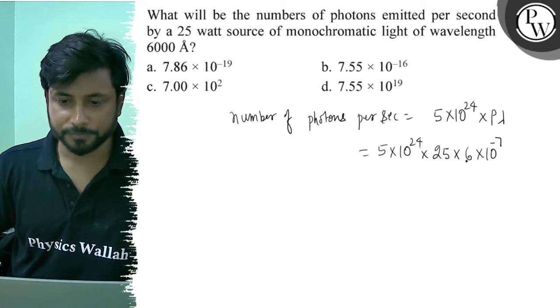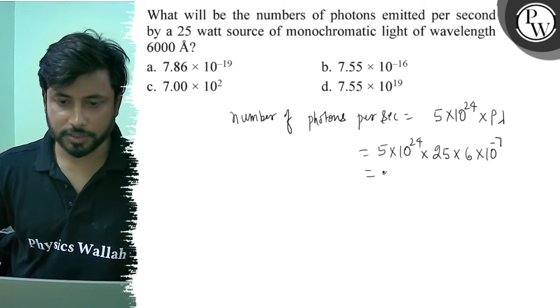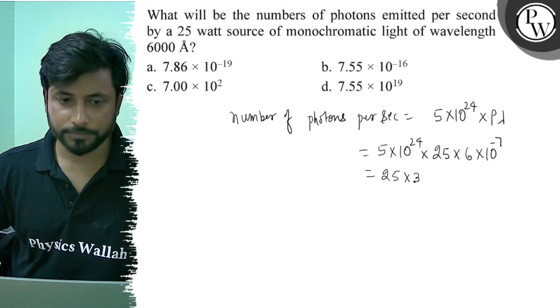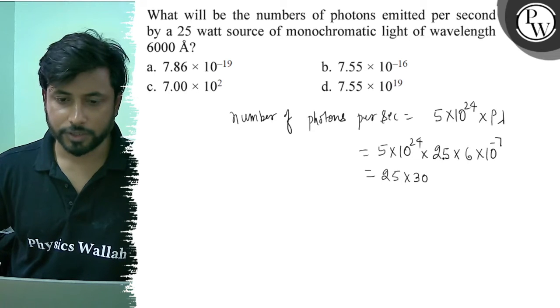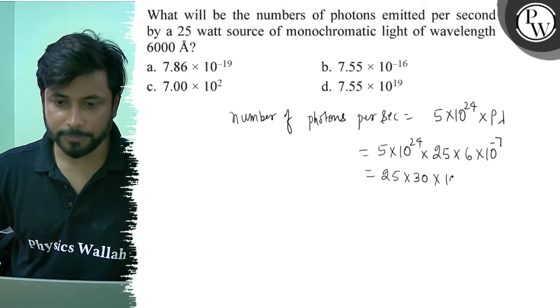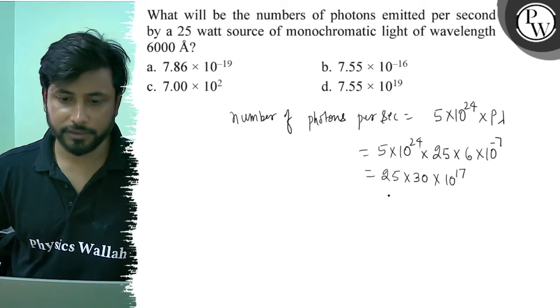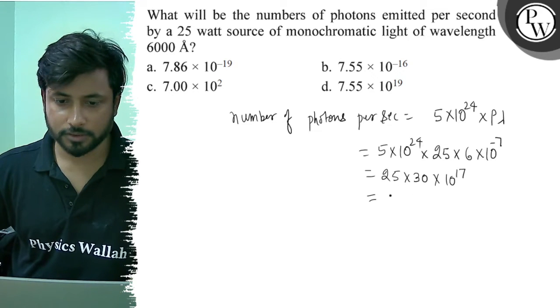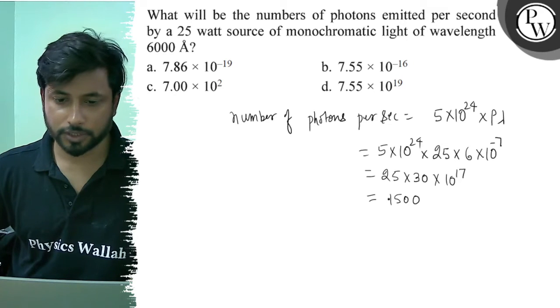Now let's calculate. 25 into 30 into 10 to the power minus 17. That gives 1500 - sorry, 7500 into 10 to the power minus 17.